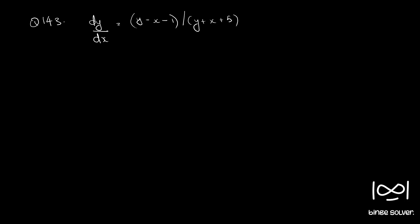Question number 143: dy by dx is equal to (y minus x minus 1) by (y plus x plus 5). This is equation 1. This is not a homogeneous equation, and we need to convert this into a homogeneous equation.